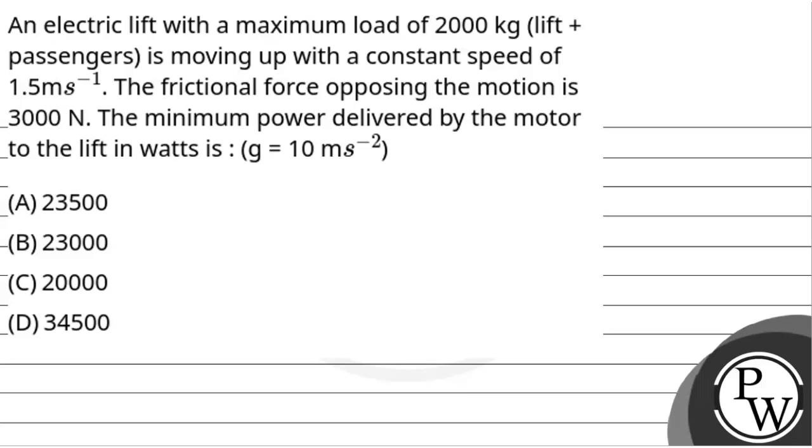Hello, let's read the question. An electric lift with a maximum load of 2000 kg, lift plus passengers, is moving up with a constant speed of 1.5 meters per second.